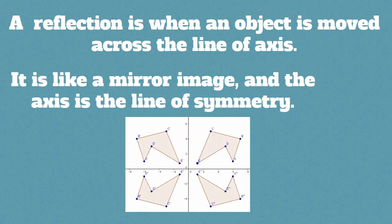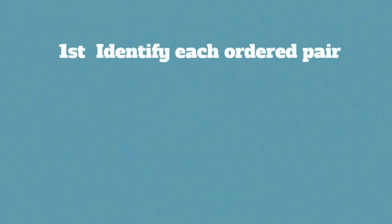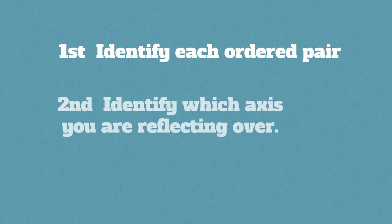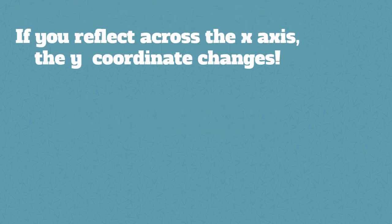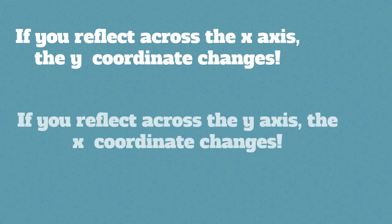Steps for creating a reflection: 1. Identify each ordered pair. 2. Identify which axis you are reflecting over. If you reflect across the x-axis then the y-coordinate changes. If you reflect across the y-axis the x-coordinate changes.